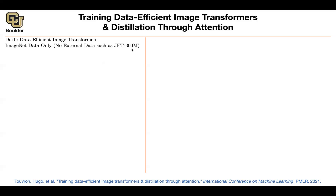Transformers are less data-efficient perhaps because they lack the inductive bias encoded in convolutions. Convolutions are locally stationary — if you take an image and shift it to the right, they classify it the same. They are invariant to such translations, and these properties are absent from a transformer model. This paper came along and said we can actually make transformers data-efficient using only ImageNet data.